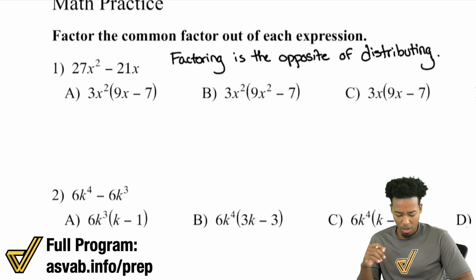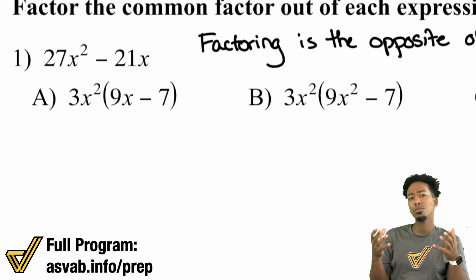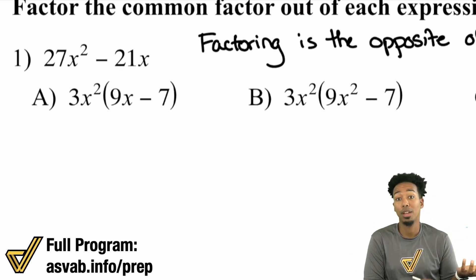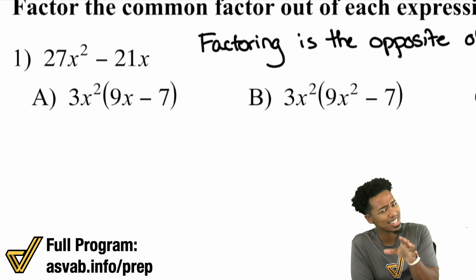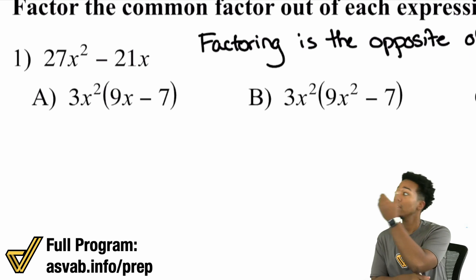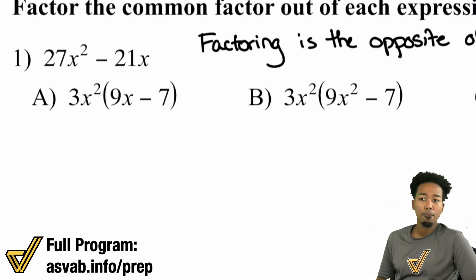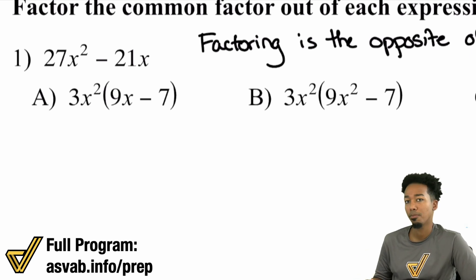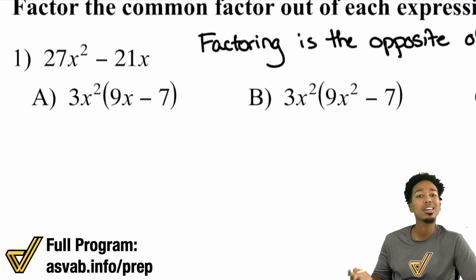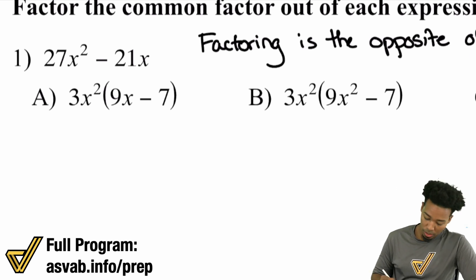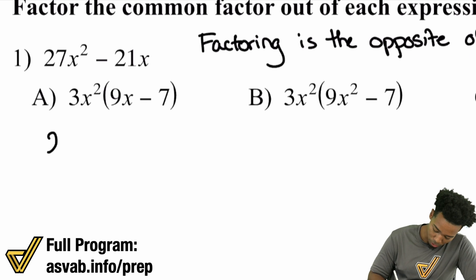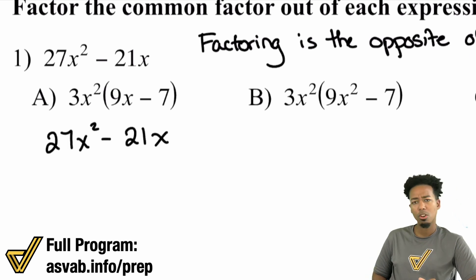So what does that mean? Well, what that means is this. You know how when you distribute, you're really multiplying, right? Everything on the outside of the parentheses multiplied with everything inside. So here what we're looking at is, well, what's the opposite? What can we divide out of both of those terms? What can we take out from both of those terms? Here's how it works. I'm going to go ahead and just start off by writing out my 27x squared minus 21x.